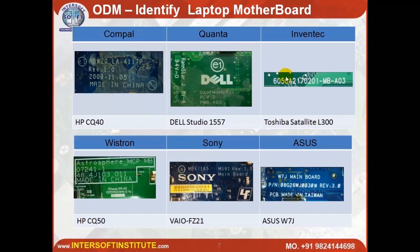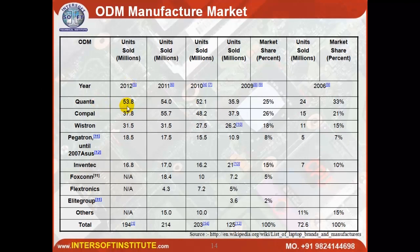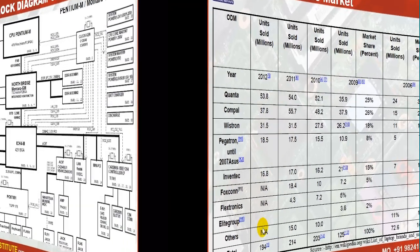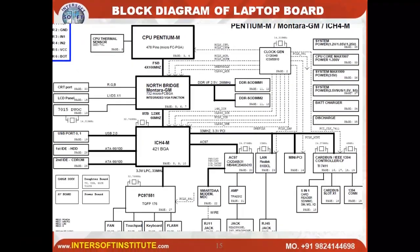For Inventec motherboards it will be written differently. In 2012, Compal had a market share of 53.8 million units, and Compal was making 37.8 million. Wistron makes other models. All model details are given. Now, how to identify the block diagram — this is an old board with northbridge and southbridge.